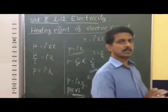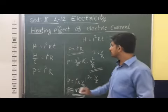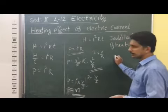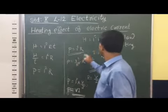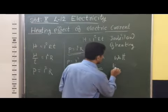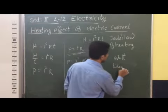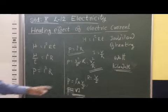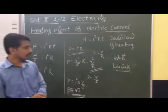Electric power means electrical energy consumed per unit time. The rate at which electrical energy is consumed is known as electric power. The SI unit of electric power is the watt. Higher units that we also use include the kilowatt.